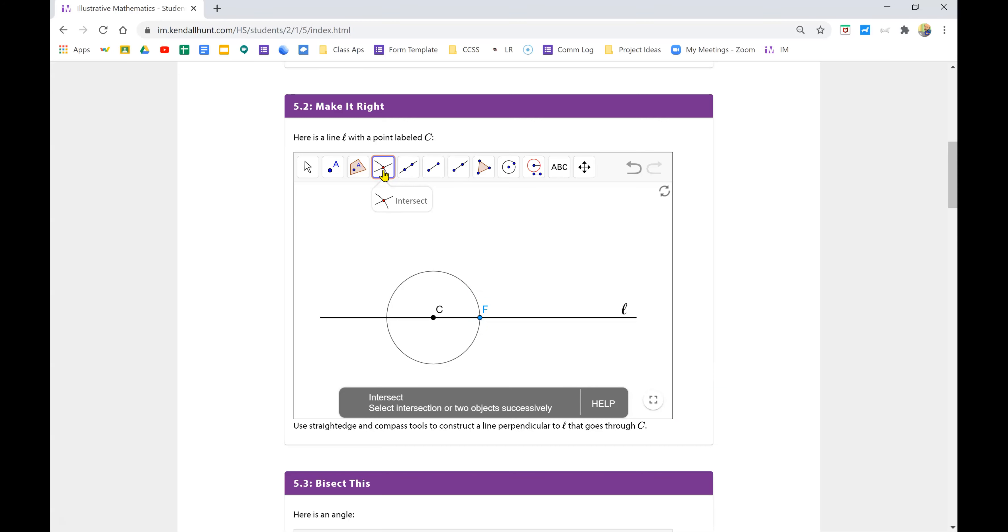I'm going to go ahead and find the other one by using the intersection tool, this one right here. So if I click that and then I click two objects, the circle and the line, it creates two points on the line that intersect with the circle. Okay, so I created a circle and found where they crossed the line.